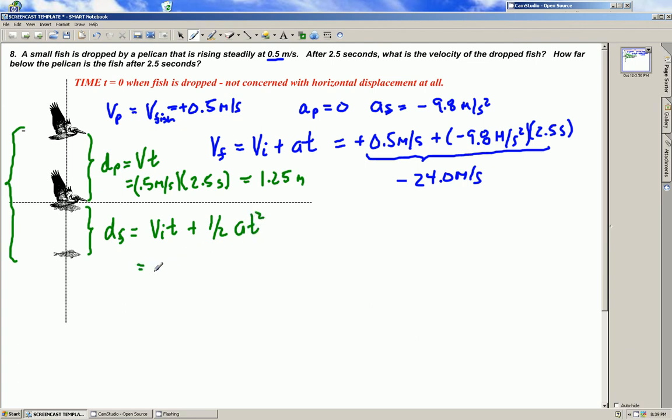Initial velocity of the fish is 0.5 meters per second times the time of 2.5 seconds plus one half acceleration of negative 9.8 meters per second squared times 2.5 seconds, that's all squared. And this total comes out to be negative 29.375 meters. That's this dimension here.